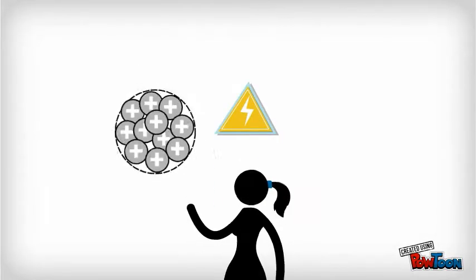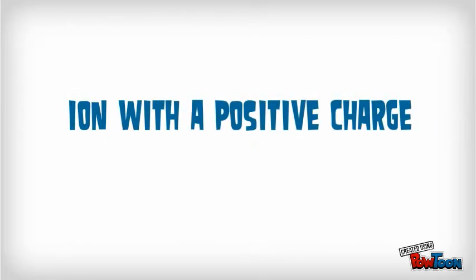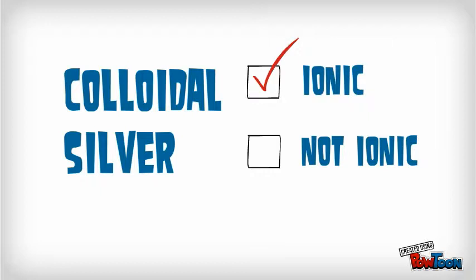A charged nanoparticle of silver is called a cation, which is an ion with a positive charge. So colloidal silver is an ionic solution.